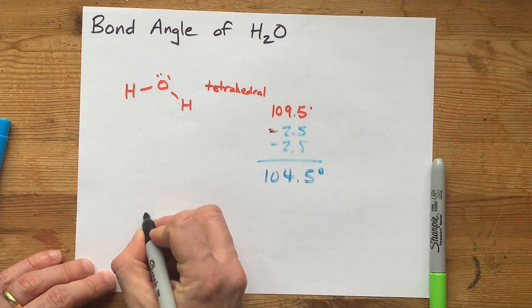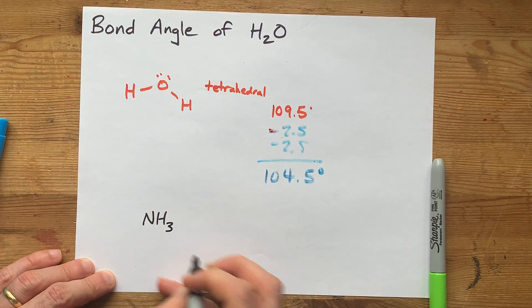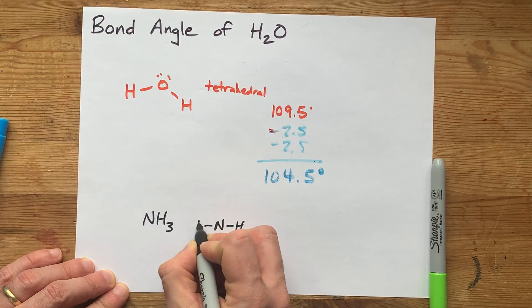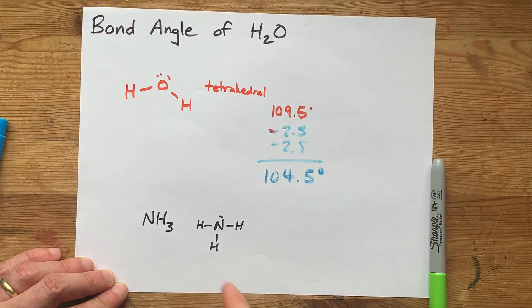Just to emphasize that I'm not just making this up. If I had to do this for NH3, I'd draw my Lewis structure. That's four things around my N,